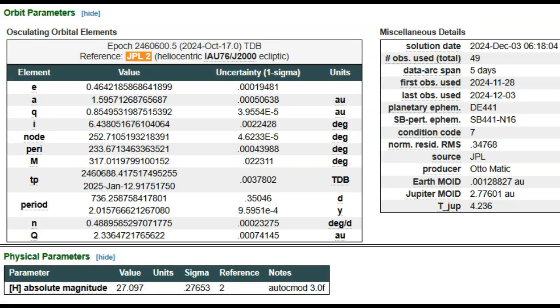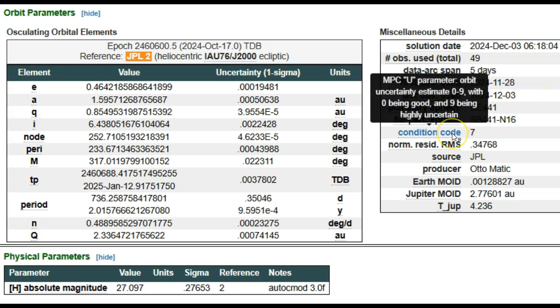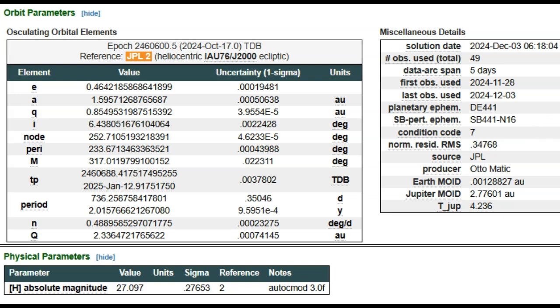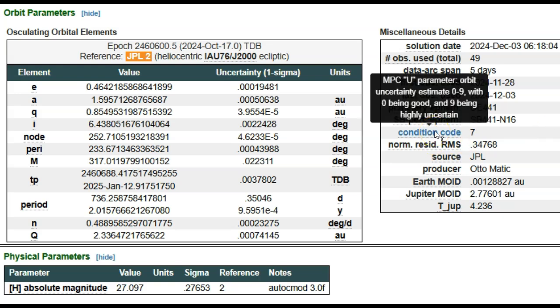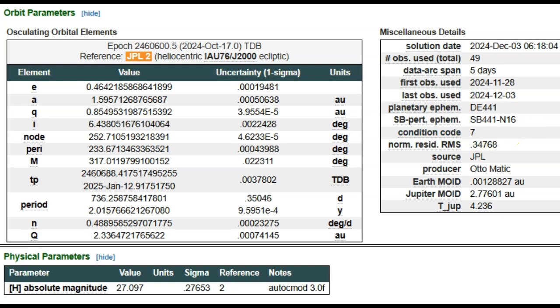Ladies and gentlemen, this is a bit of a strange one. The solution date was in fact today, December 3rd, 2024, although they say they saw it November 28th. A five-day data arc span, that's quite a few days to only have 49 observations and to have such a high condition code of 7. Nine being highly uncertain, they have no idea where it's headed. Zero meaning they know exactly where it's headed, 7 being much closer to 9 than zero.